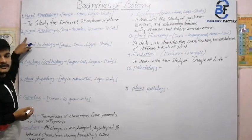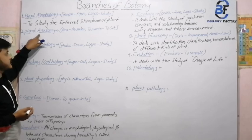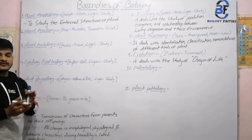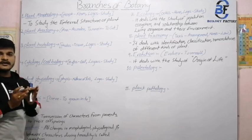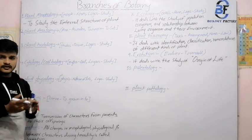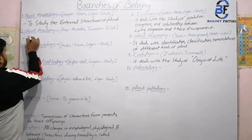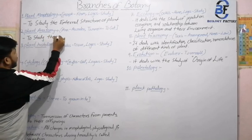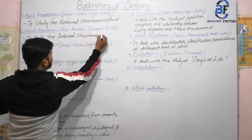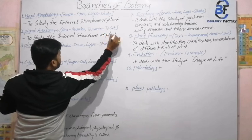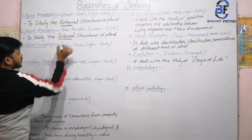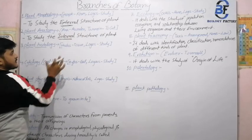Next, if we talk about anatomy — the word anatomy means to cut out. That means every part is cut out and the internal structure is studied. So here, plant anatomy means to study the internal structure of a plant by means of microscopes. The basic difference is: plant morphology means study of external structure, and plant anatomy means study of internal structure.